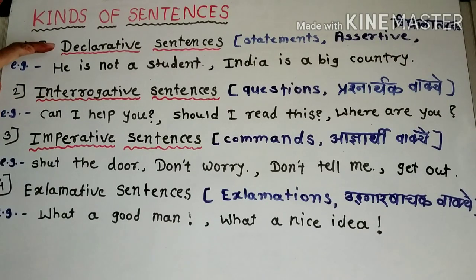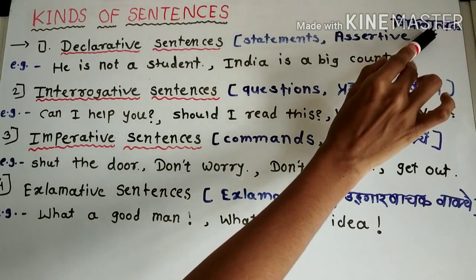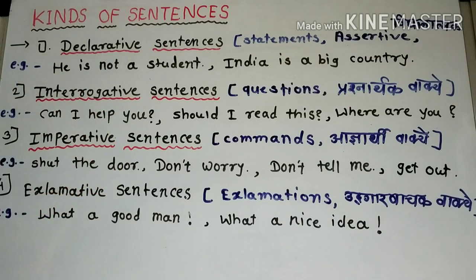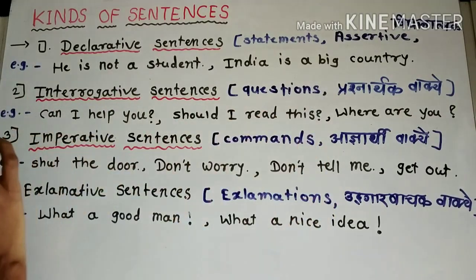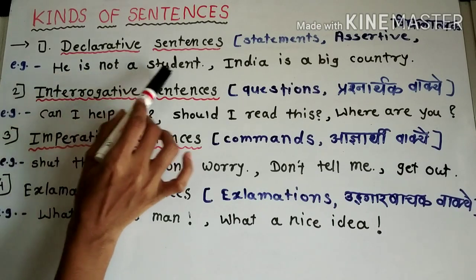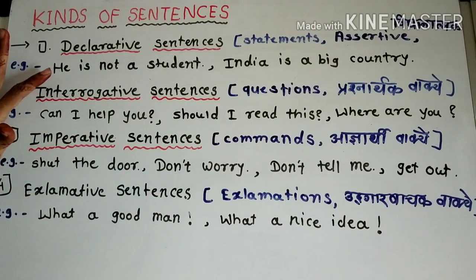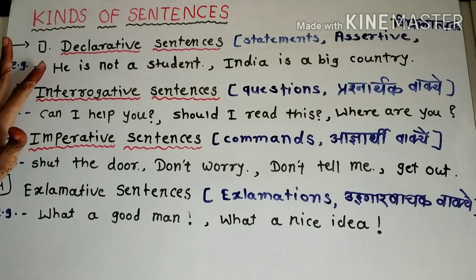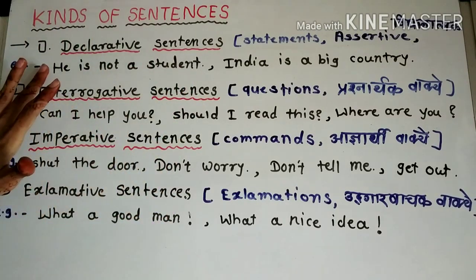So first is declarative sentences. Declarative sentences means 'vidhanAtmak vakye' — statement sentences. We also call them assertive sentences. In these sentences, we simply make a statement. For example: 'He is not a student.' Here we are just stating a fact — no question, no command, no exclamation.